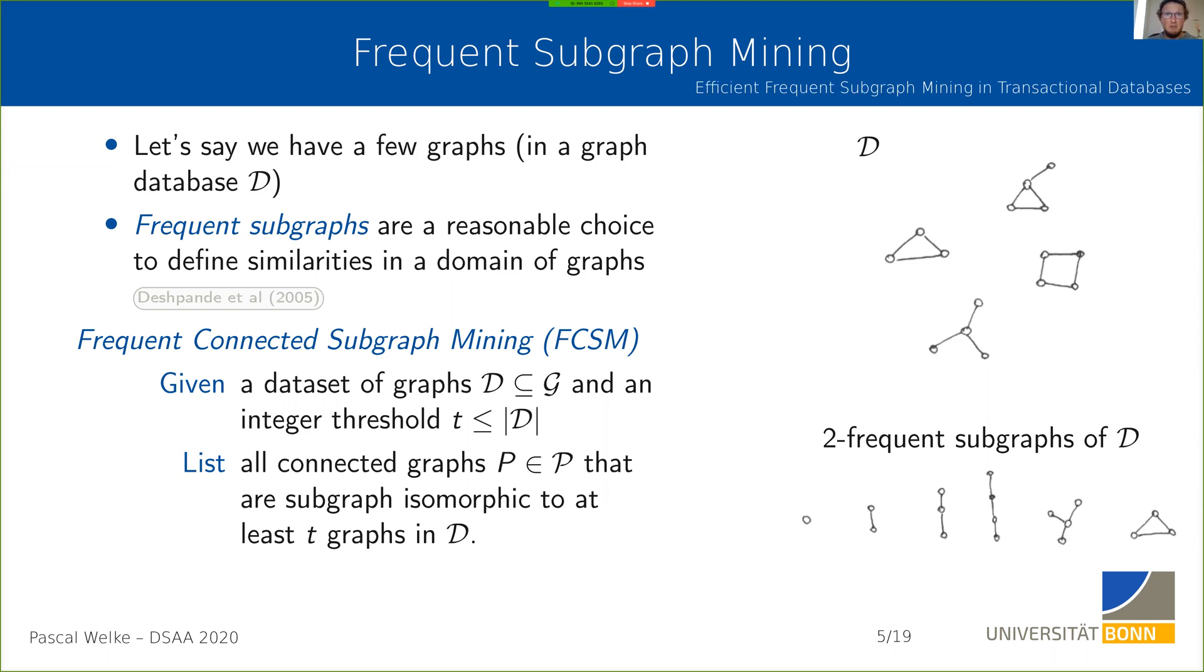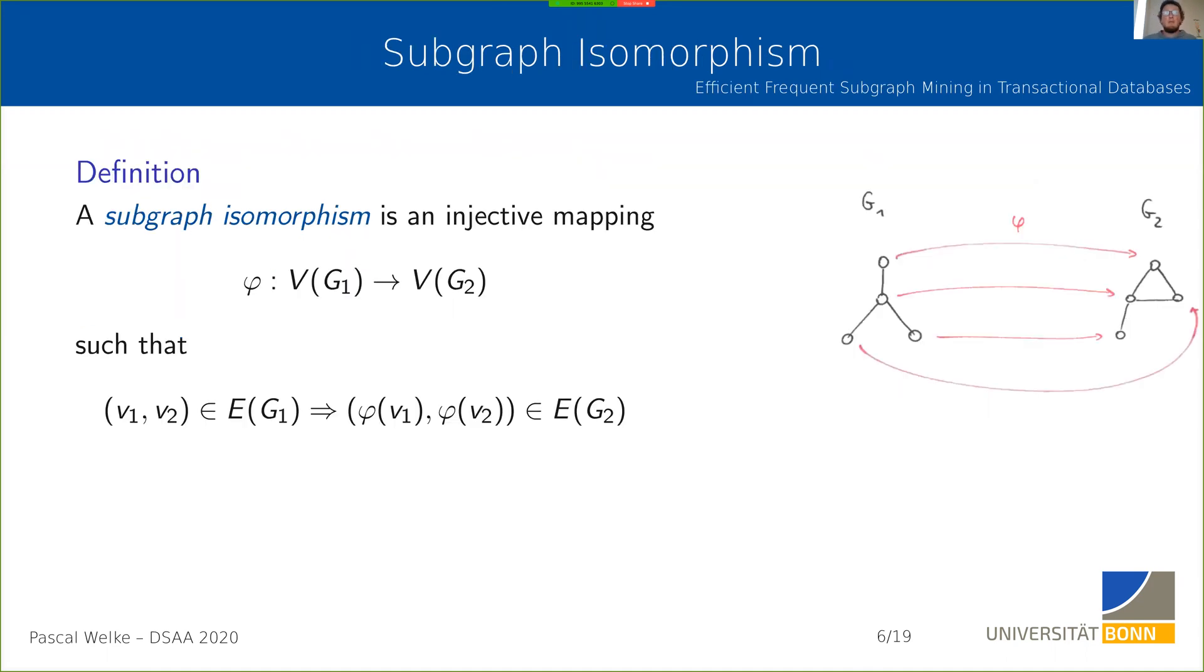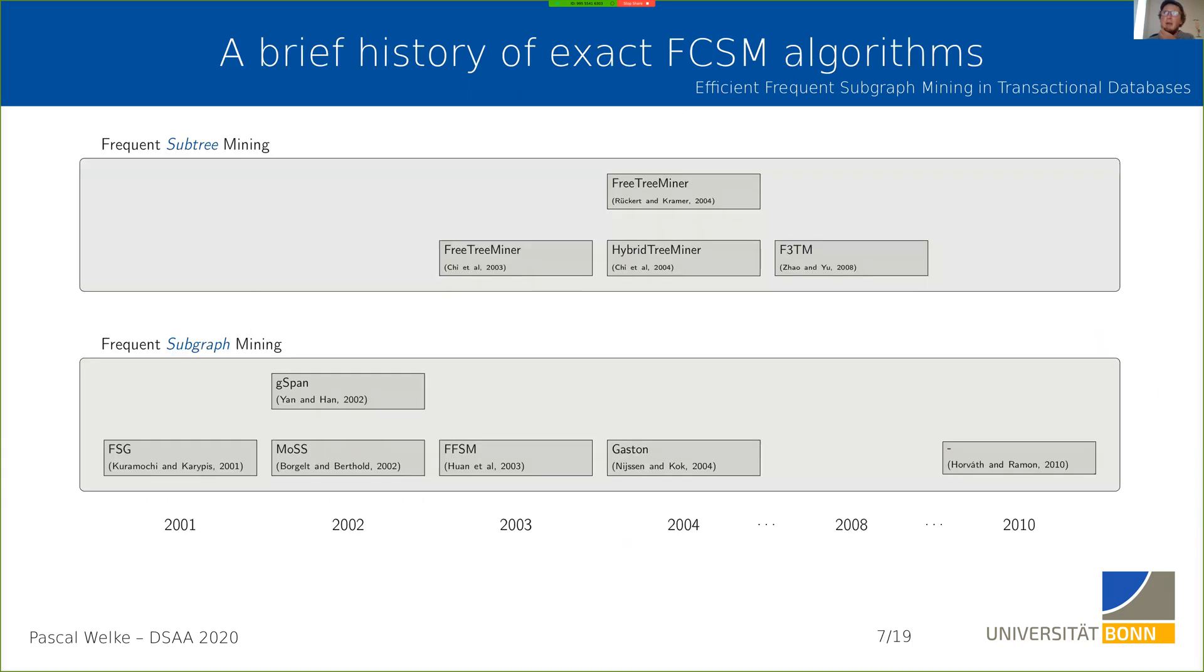Subgraph isomorphism is a mapping from the vertices of the pattern graph g1 to the vertices of the transaction graph g2 such that whenever there is an edge in g1 between two vertices, there must be an edge between the images of these vertices in g2. This is the most natural or intuitive notion to define whether a pattern graph is contained in the larger graph. This problem is NP-hard.